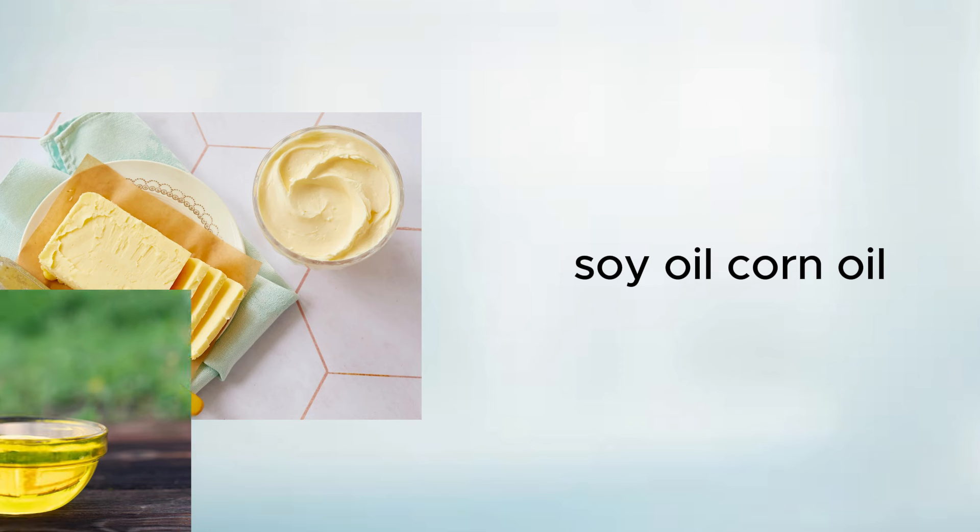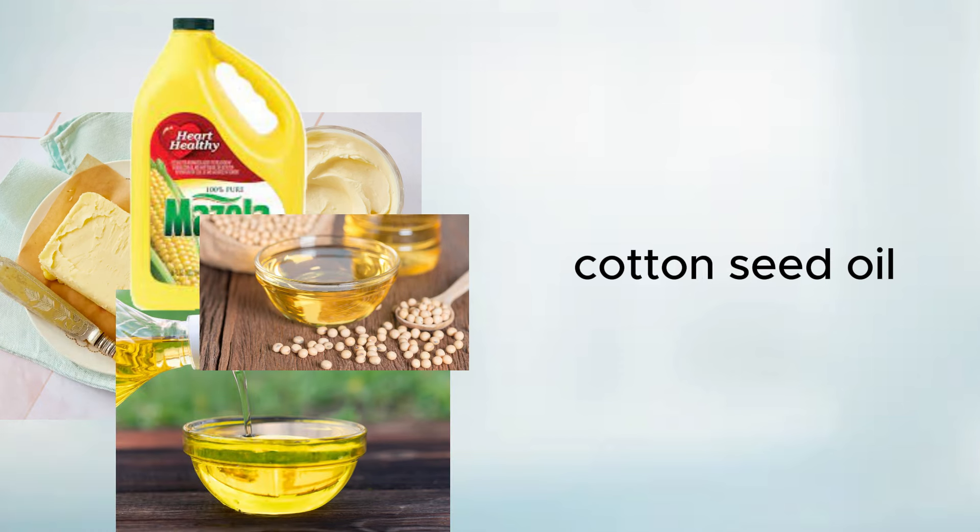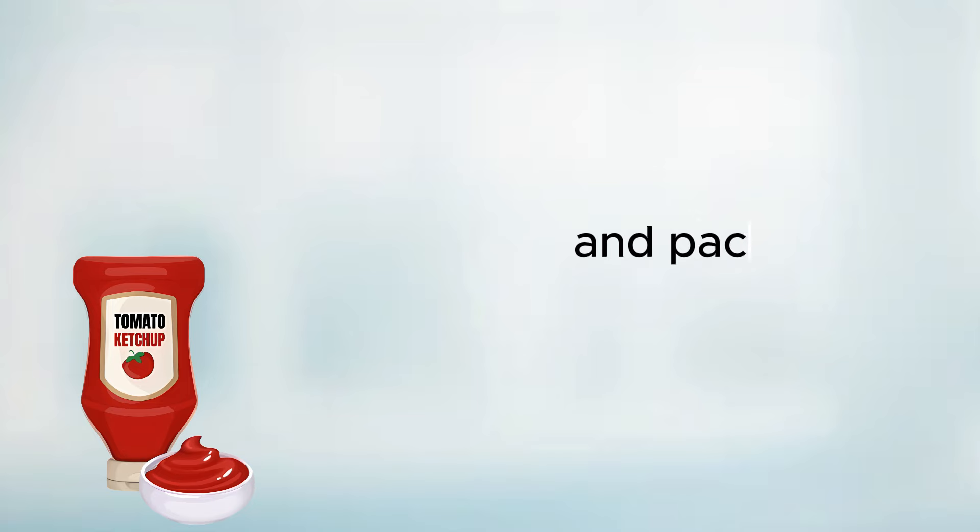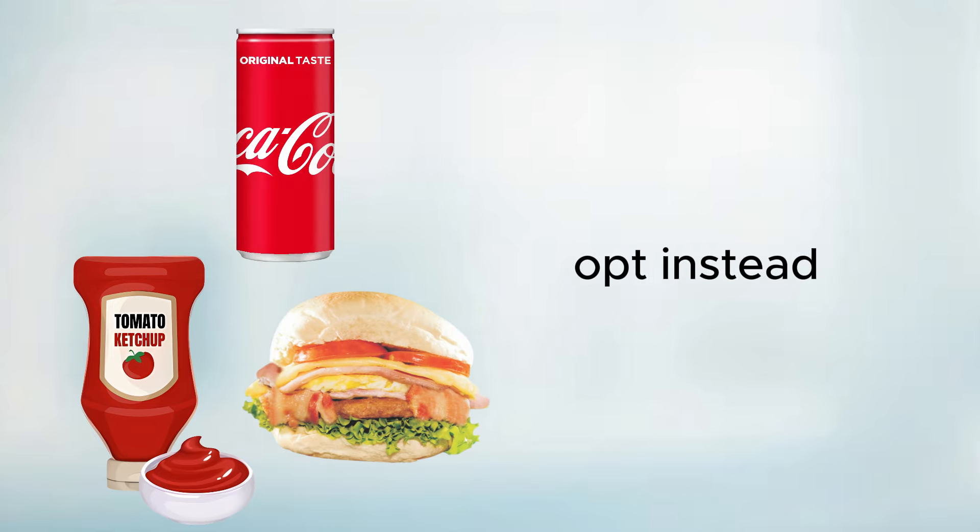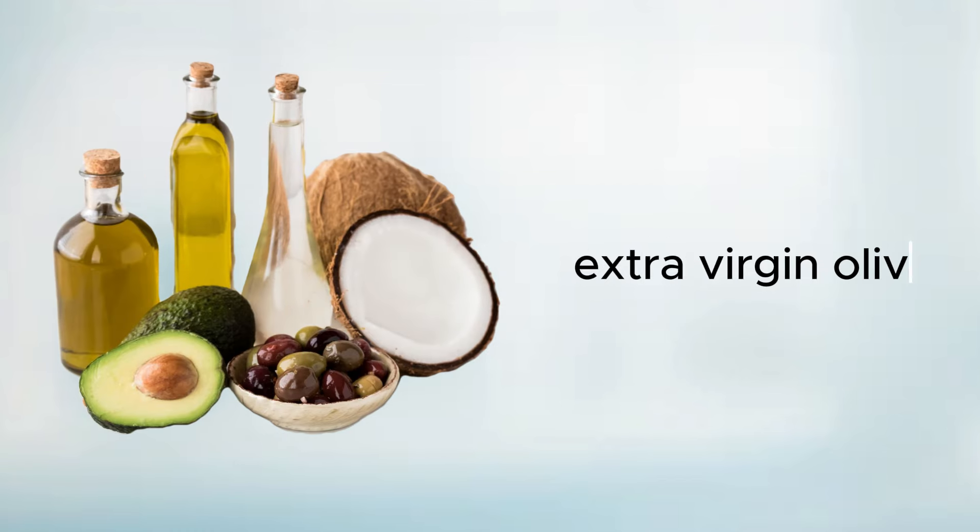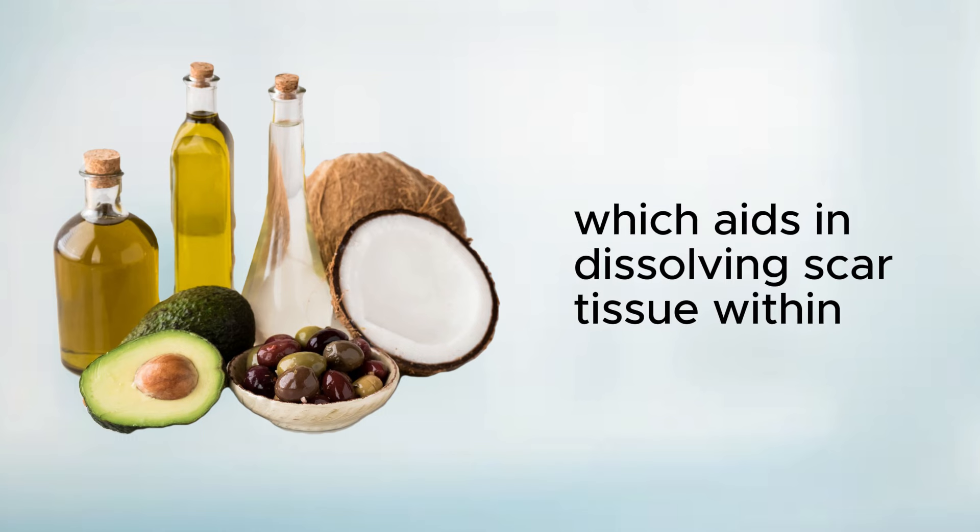One, eliminate inflammatory vegetable oils, such as margarine, soy oil, corn oil, cottonseed oil, canola oil, and processed olive oils from your diet. These oils are frequently used in fast food and packaged foods. Opt instead for cooking your own nutritious meals at home, incorporating healthier alternatives like organic raw coconut oil, extra virgin olive oil, and cold-pressed avocado oil. These healthier fats are enriched with essential nutrients like vitamin E, which aids in dissolving scar tissue within the liver.